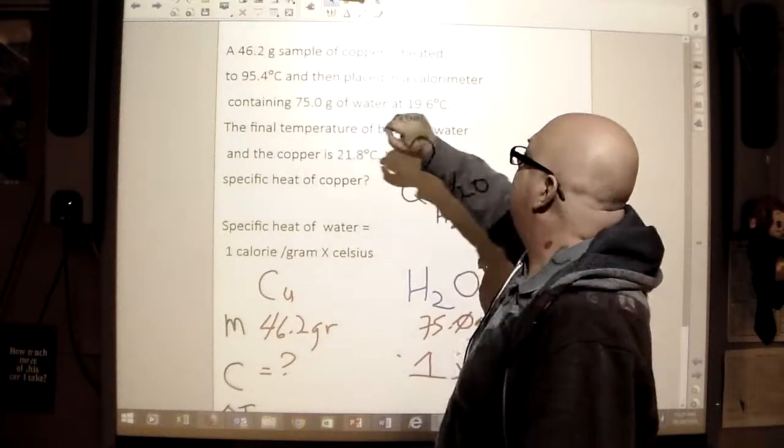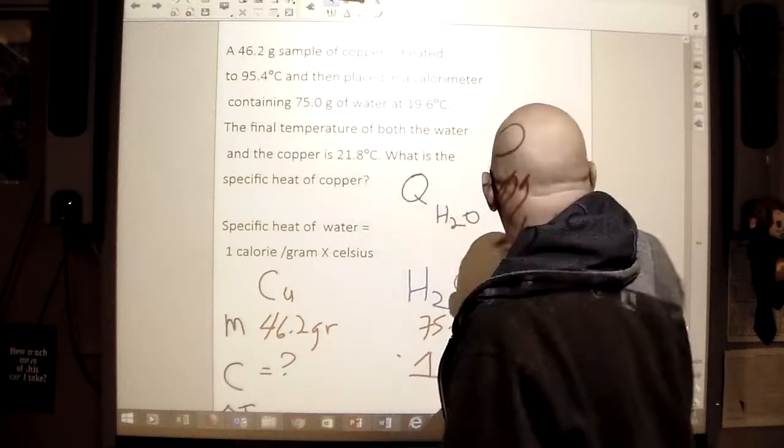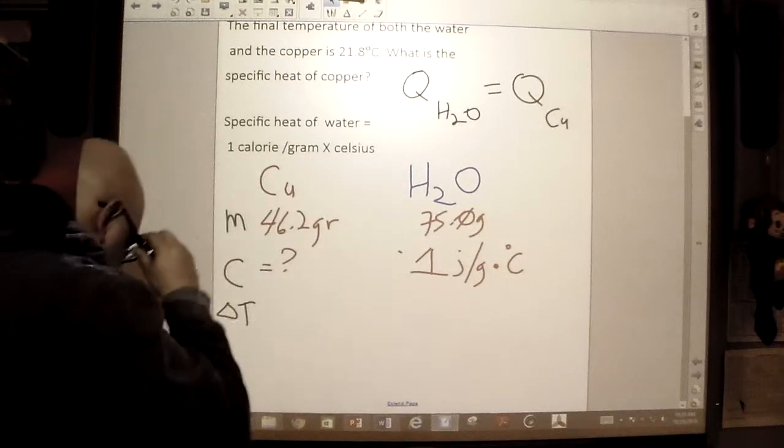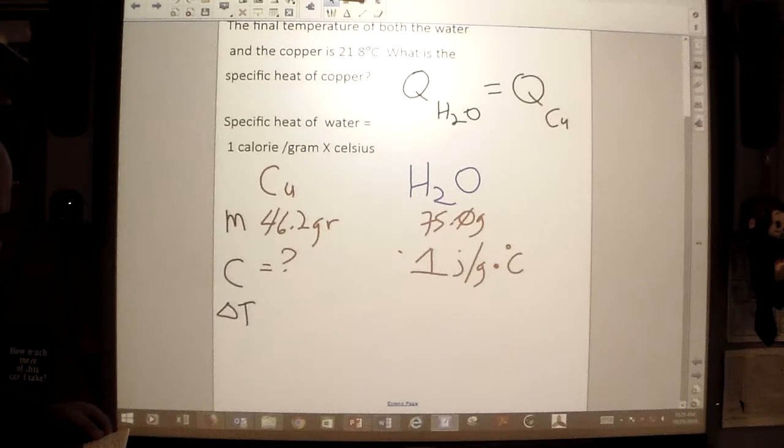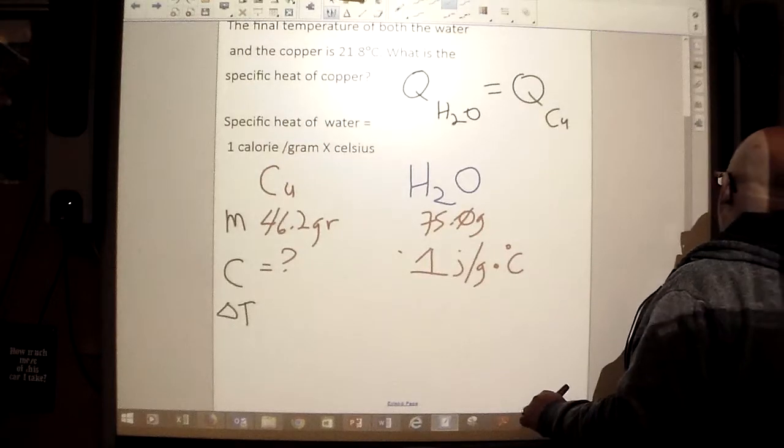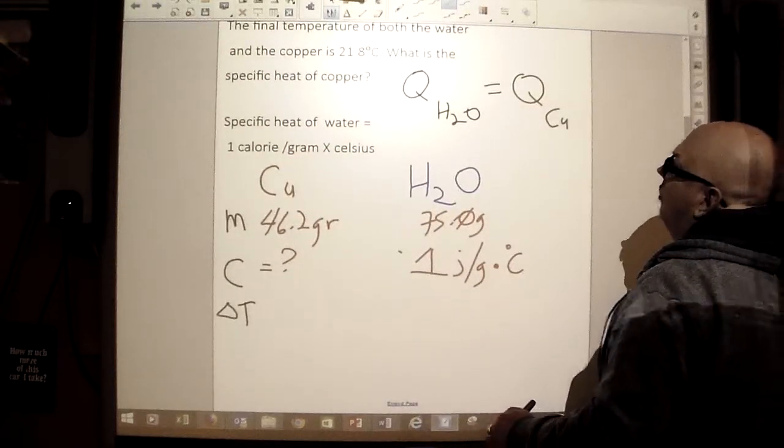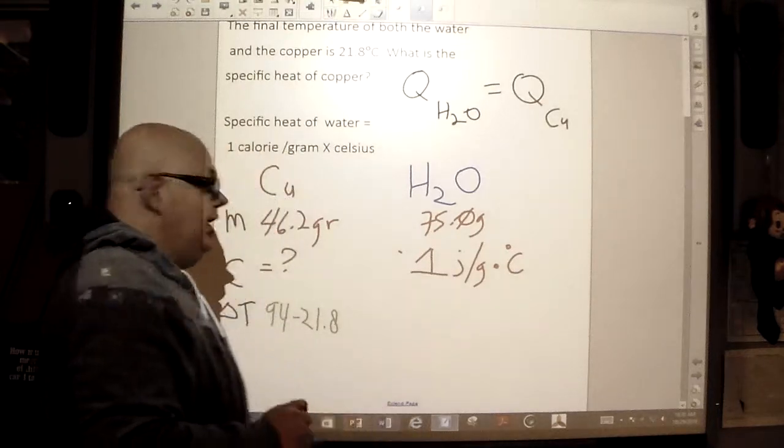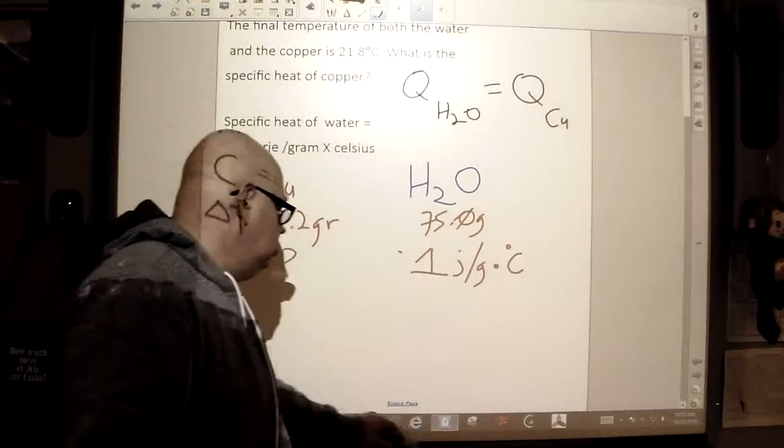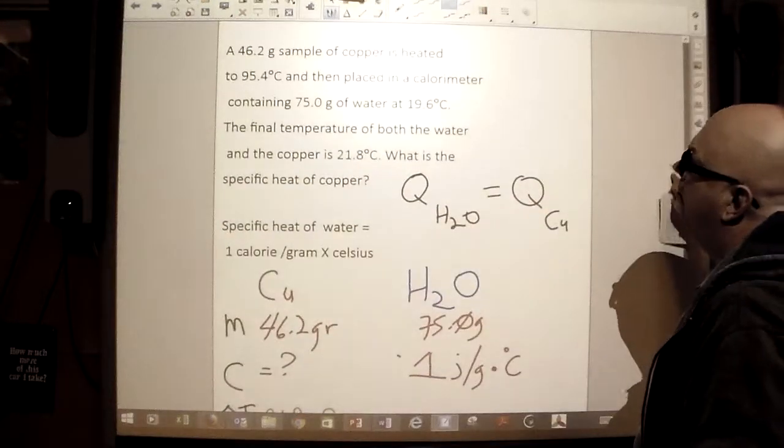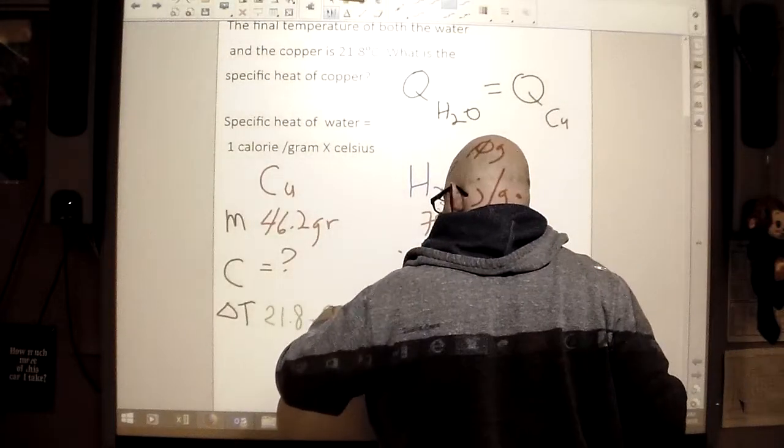We have copper starting at 95.4 degrees Celsius, and it ends at 21.8 degrees Celsius. So, delta T is 95.4 minus 21.8. Or should I say, actually, that would be incorrect. It's the final temperature minus the initial, right? So, it's 21.8 minus 95.4, sorry.